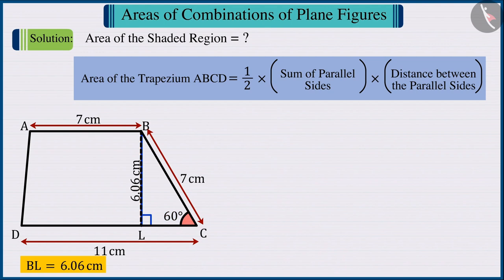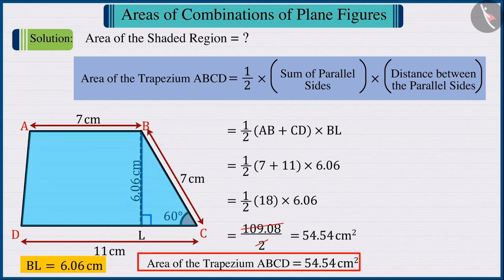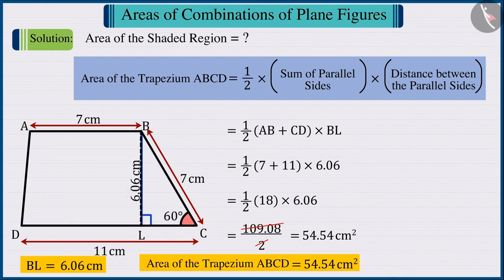Hence, substituting the values of AB, CD, and BL in the formula for the area of a trapezium and solving, we can find the area of trapezium ABCD, which is 54.54 cm².